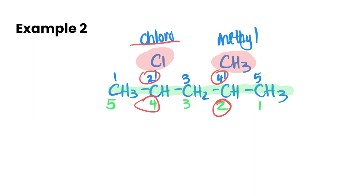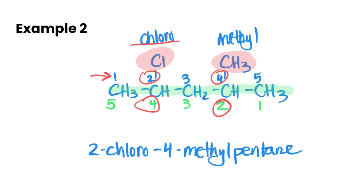So that is our chloro, which means we're going to use the blue system of numbering here. We're going to go 2-chloro and then 4-methyl, and a 5-carbon chain so that is a pentane. So it is 2-chloro-4-methylpentane.